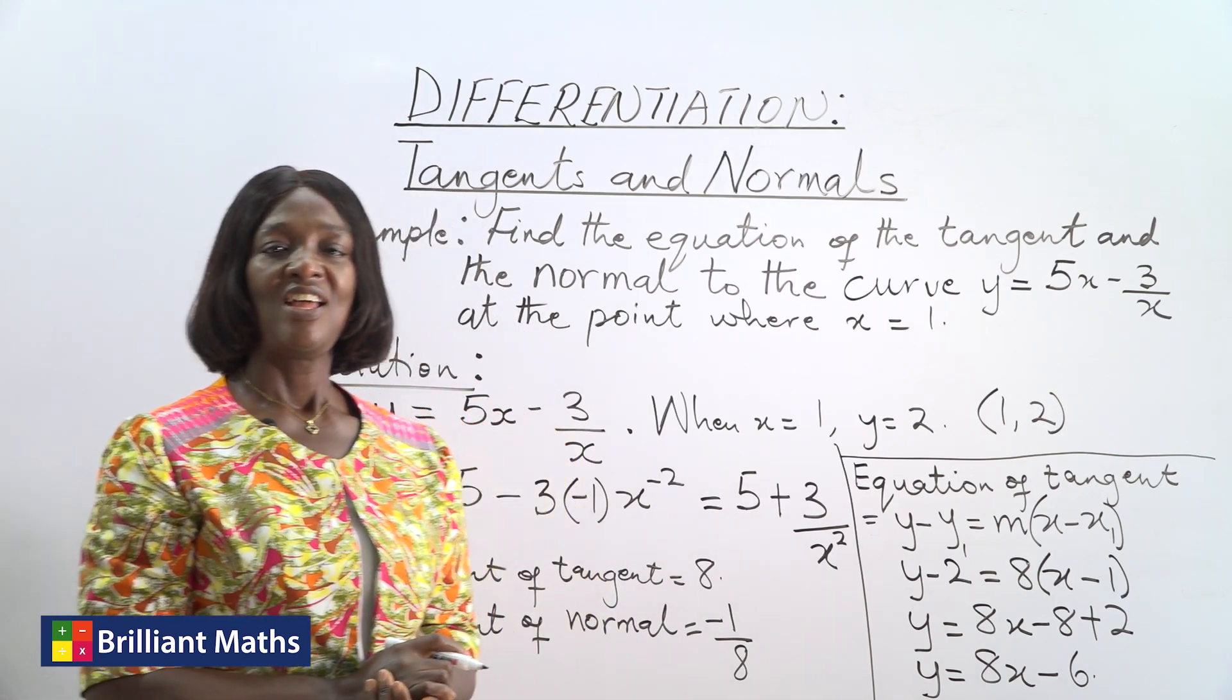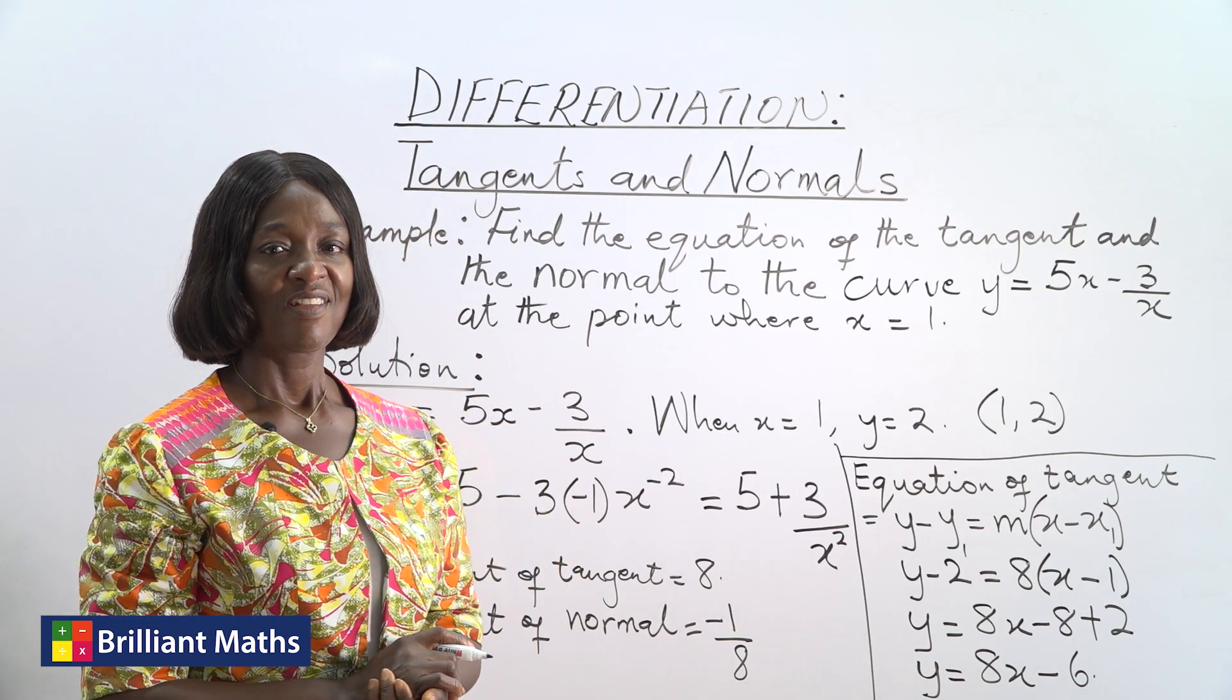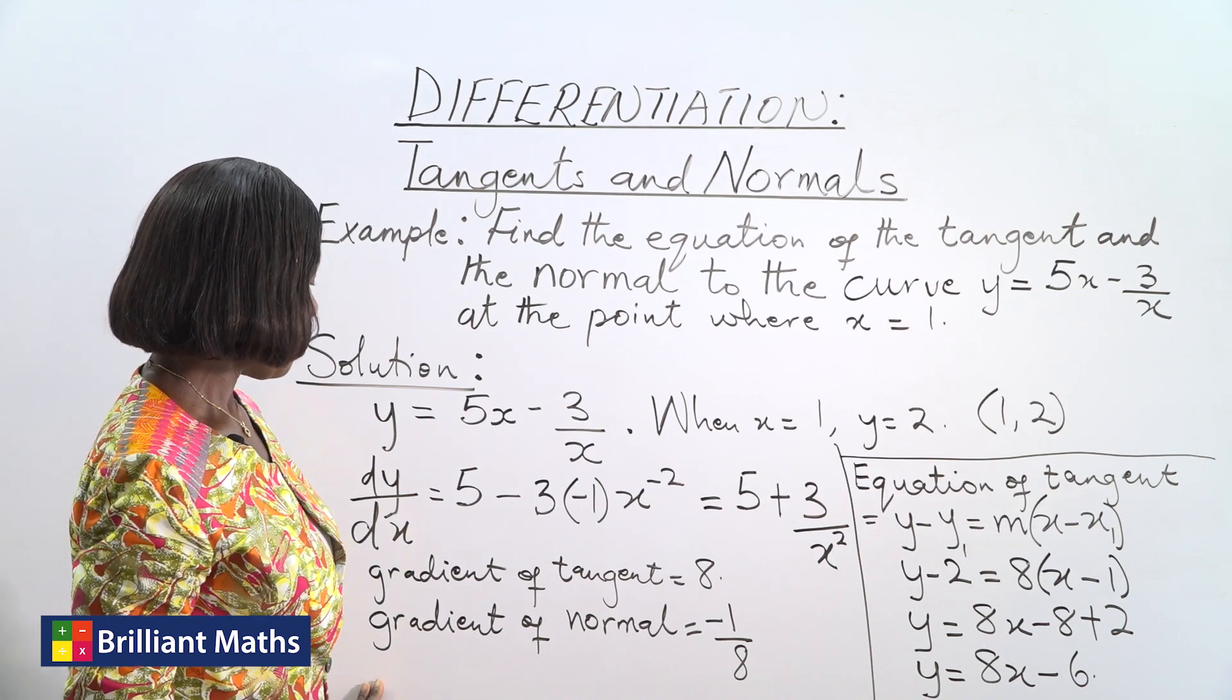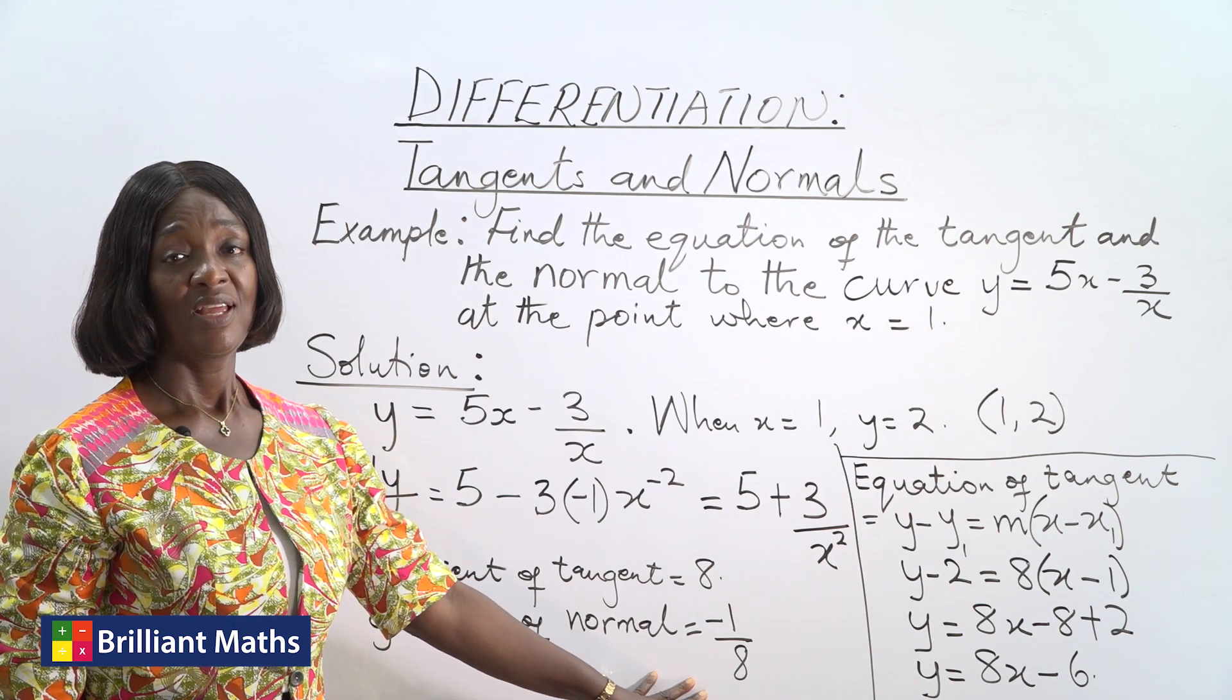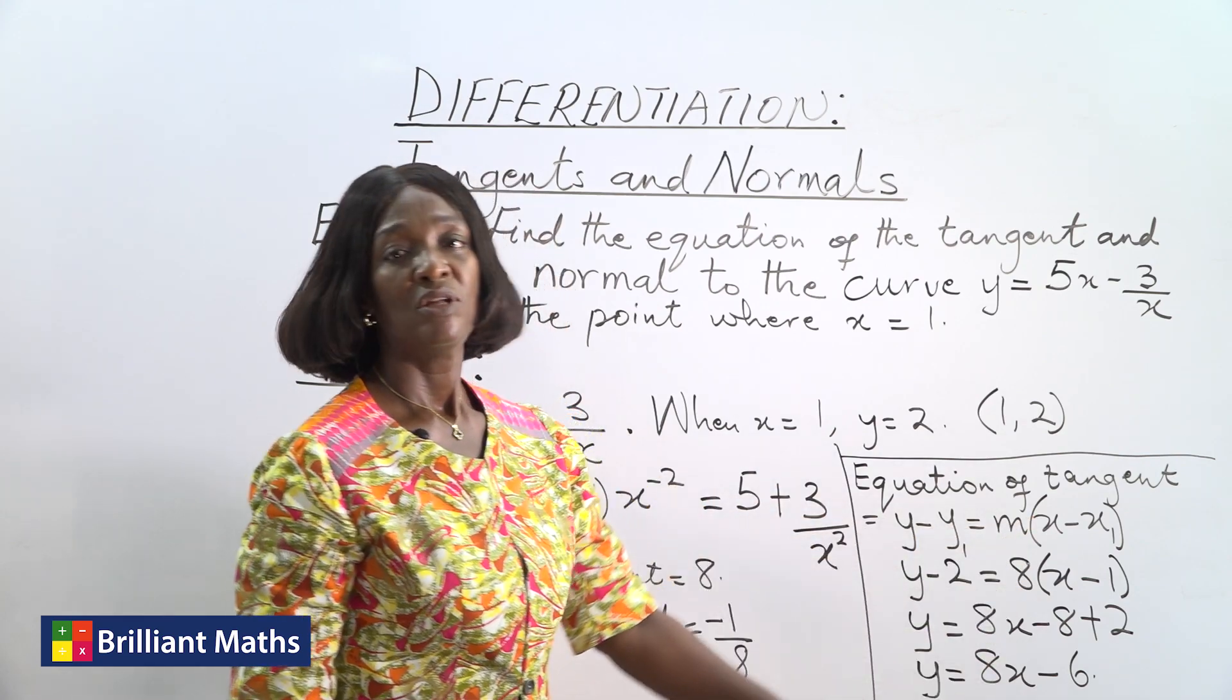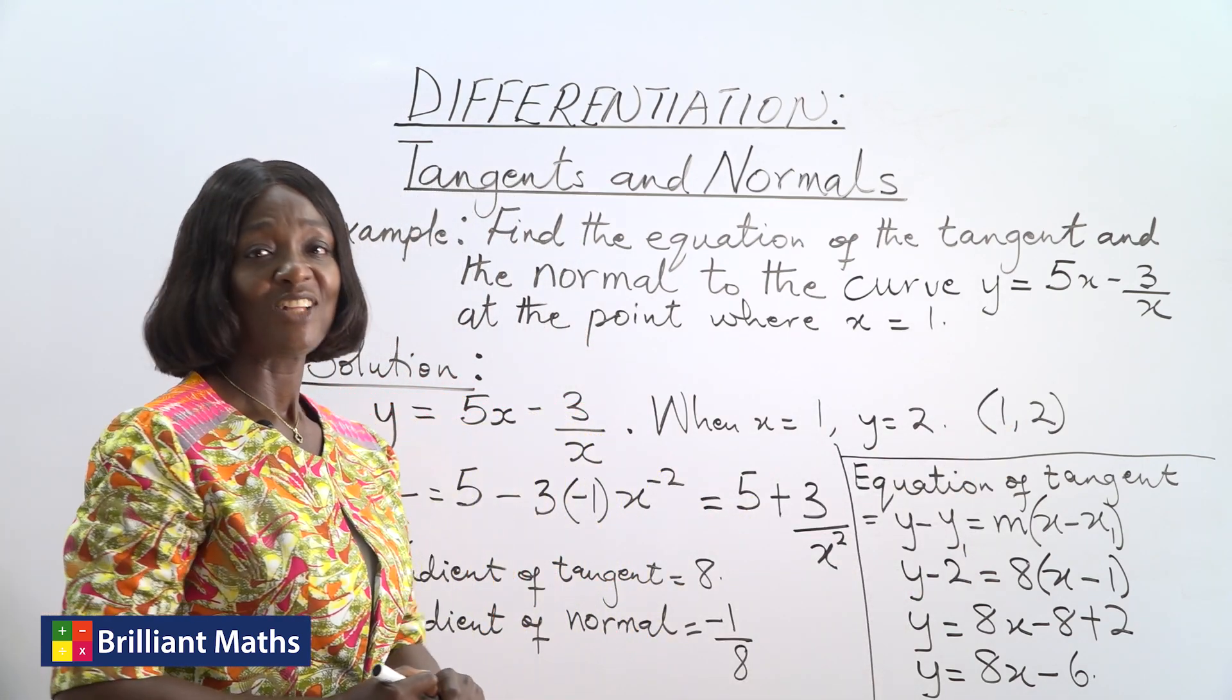Next is to find the equation of the normal, and I'm going to leave that to you. Finish it out and let me know what you get. Remember, we already have the gradient of the normal. It's -1/8. So all that is changing here is m is changing from 8 to -1/8. You're using the same point where x is 1 and y is 2. Finish that up and you'll be happy.